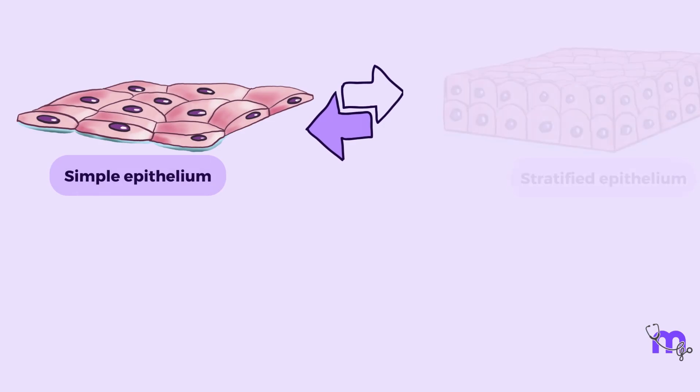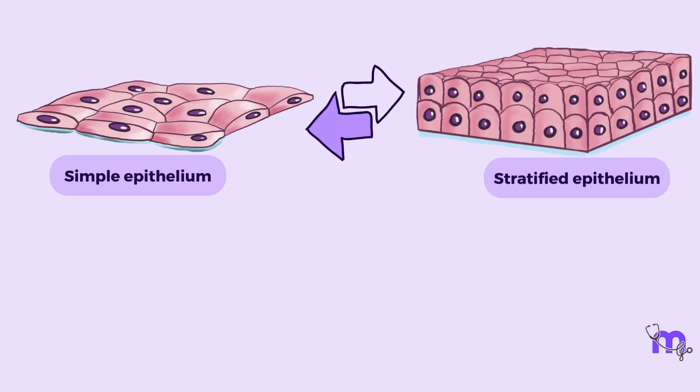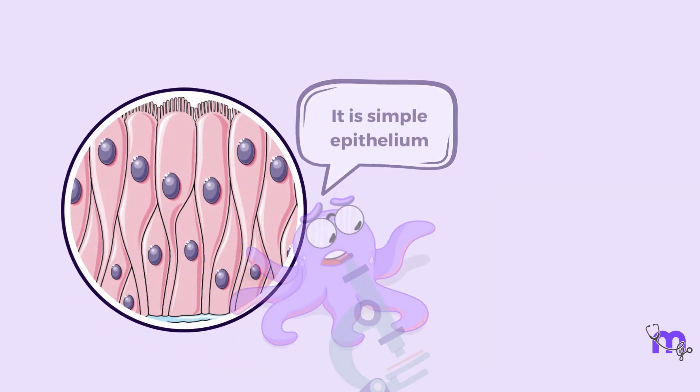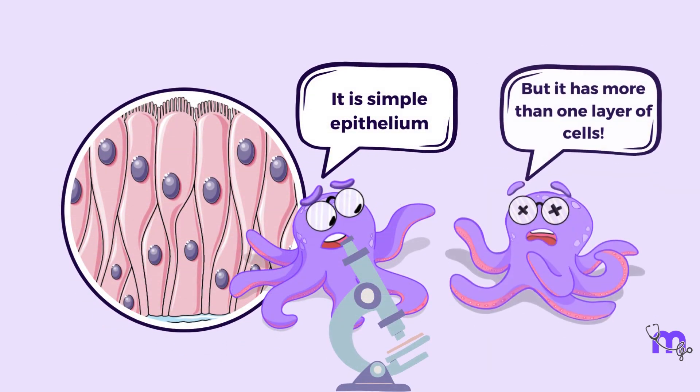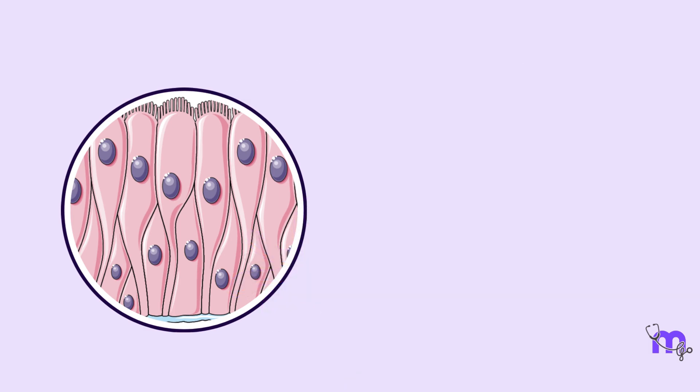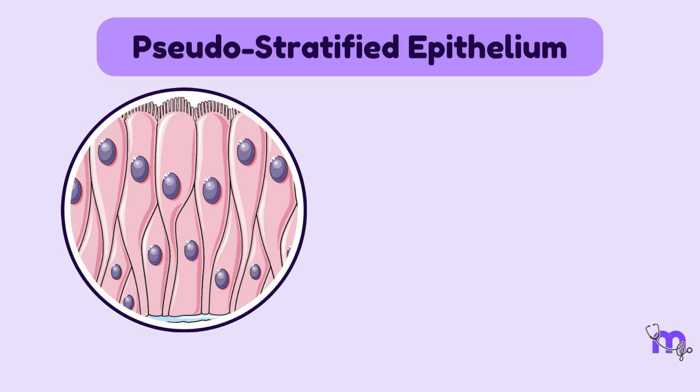In some areas of the body, we see a special transition between the simple and stratified epithelia and hence the name transitional epithelium. However, sometimes simple epithelium gives a false appearance of being multi-layered and therefore gets the name pseudo-stratified epithelium. Pseudo meaning false.